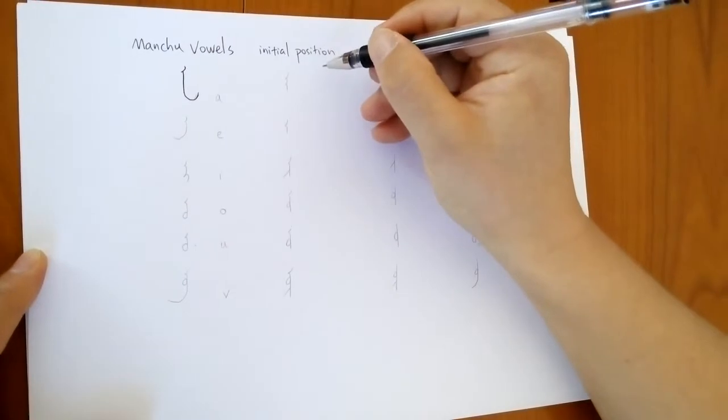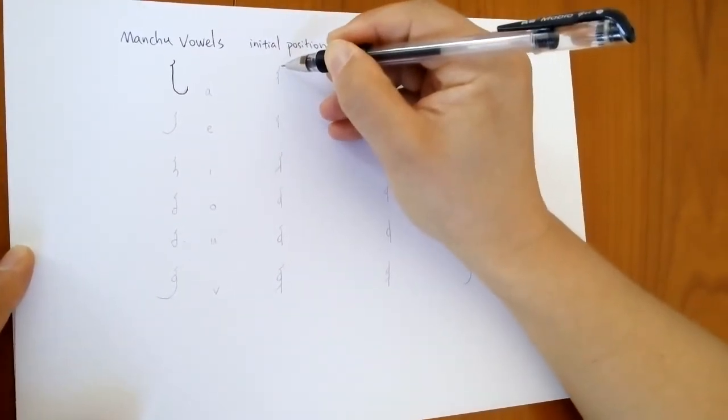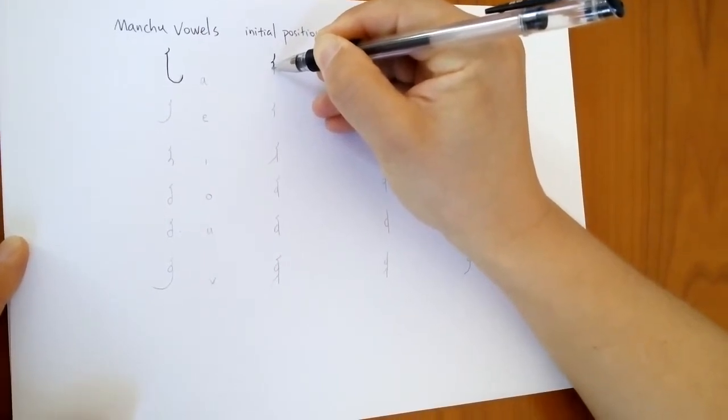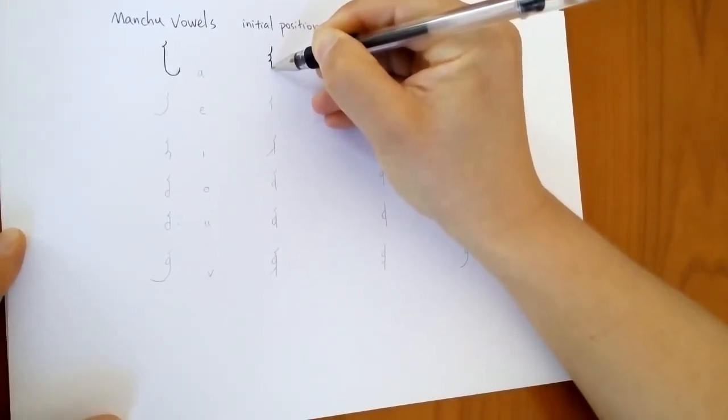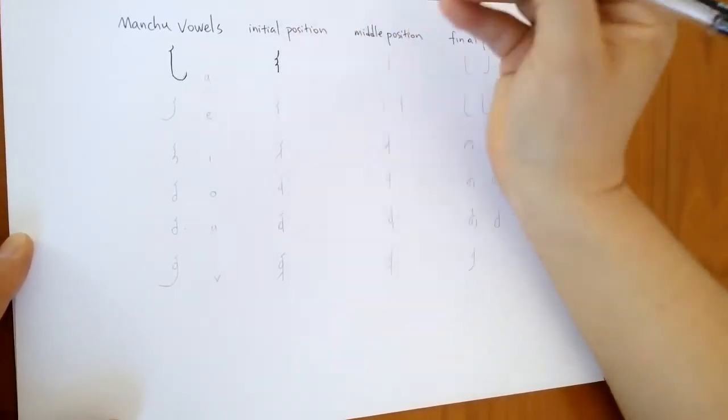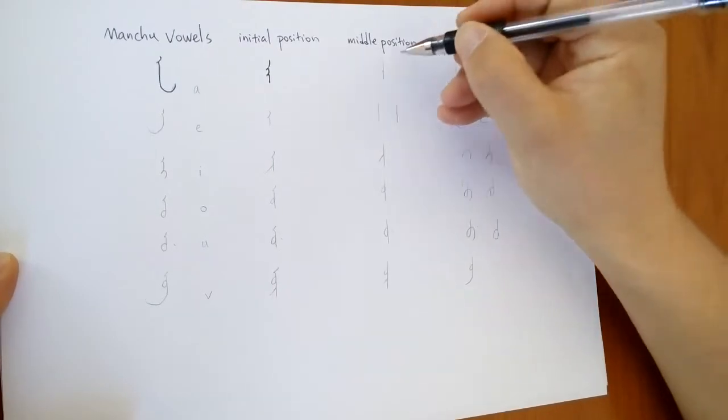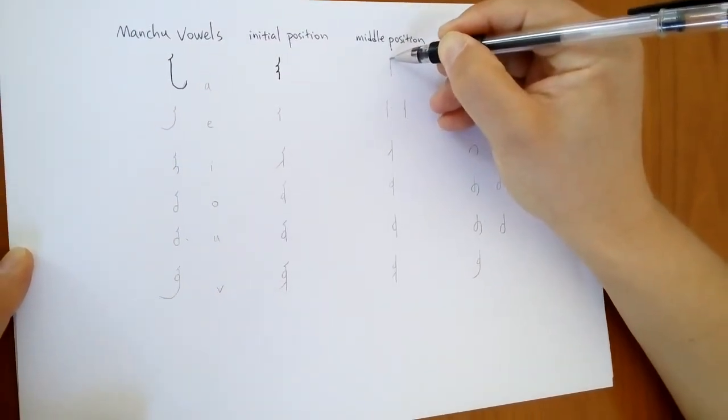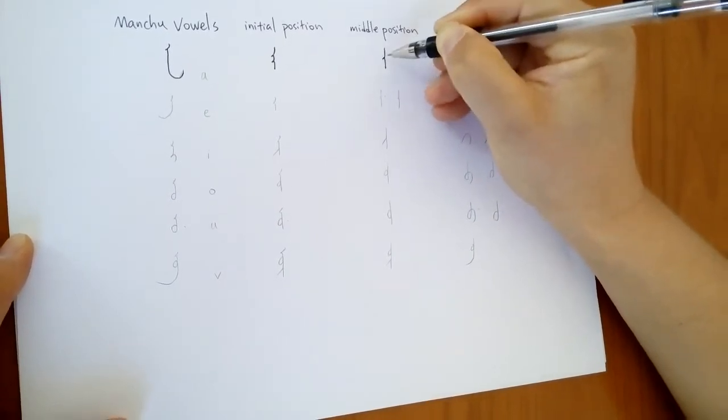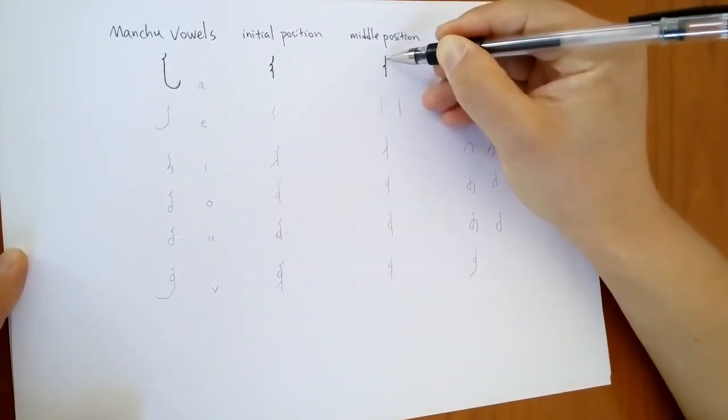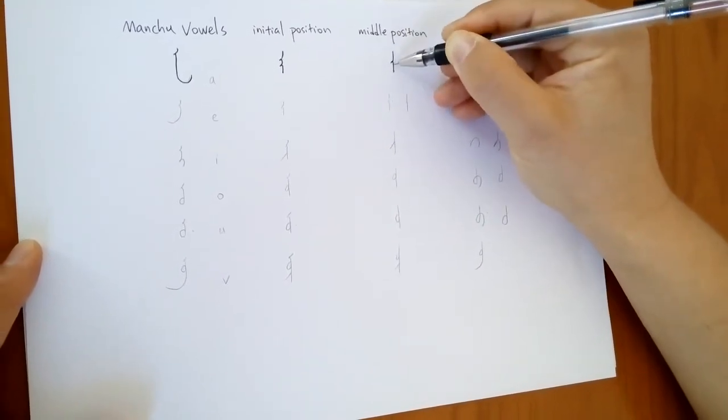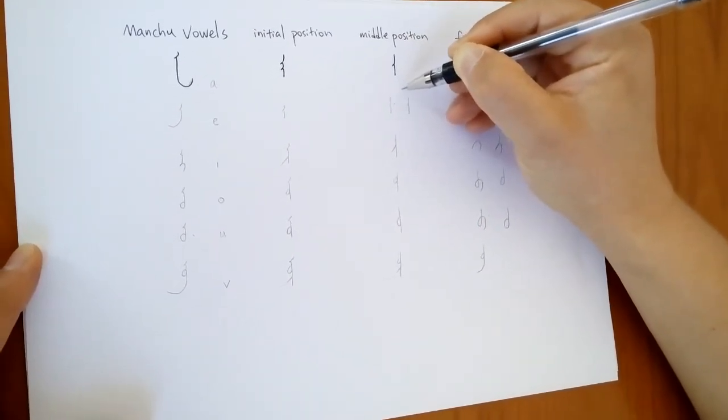When it appears as the initial position in a word, it goes this way. A in the beginning with two teeth. In the middle with only one tooth. This stroke means there are letters above and this stroke means there are letters following.